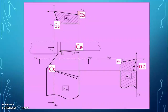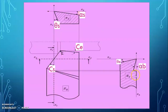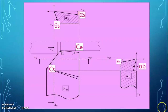The side rake angle is the orientation of the tool's rake surface from the reference plane, and it is measured in the longitudinal plane, pi-X. The second rake angle is the back rake angle, denoted as alpha-b, which is also the orientation of the tool's rake surface from the reference plane but measured in the transverse plane, pi-Y.